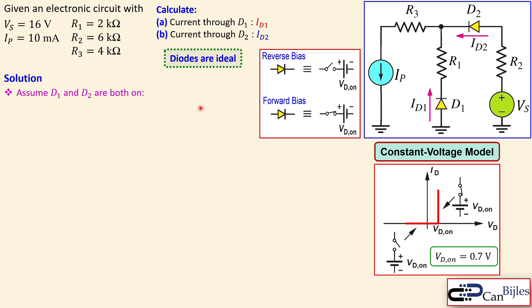In this case we have two diodes, so we don't know beforehand which one is on and which one is off. We assume something and we have four variations when you have two diodes. So we can say D1 and D2 are both on, so we start with that one.